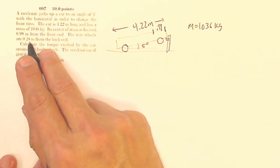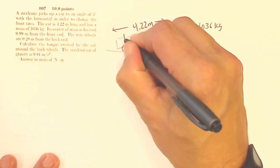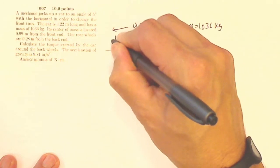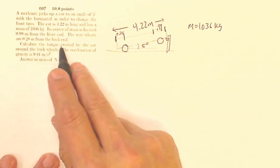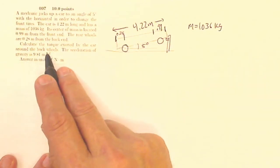The rear wheels are 0.28 meters from the back end. So this is going to be 0.28 meters. It's going to be this distance. The torque exerted by the car around the back wheels.